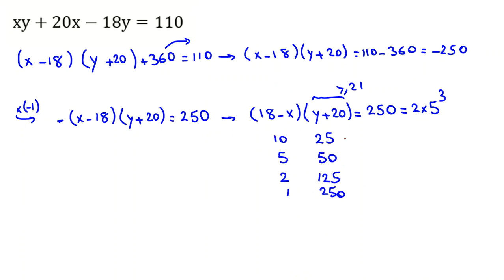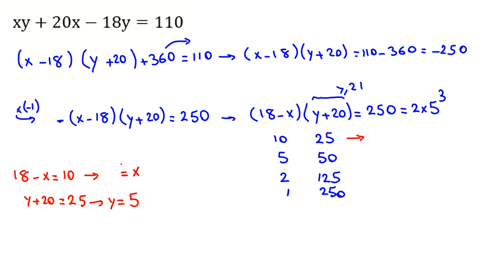Let's check each case. First case: 18 minus x equals 10, and y plus 20 equals 25. Taking 20 to the right hand side, y equals 25 minus 20, which is 5. Taking negative x to the right hand side, x equals 18 minus 10, which is 8. So for this case, x equals 8 and y equals 5.